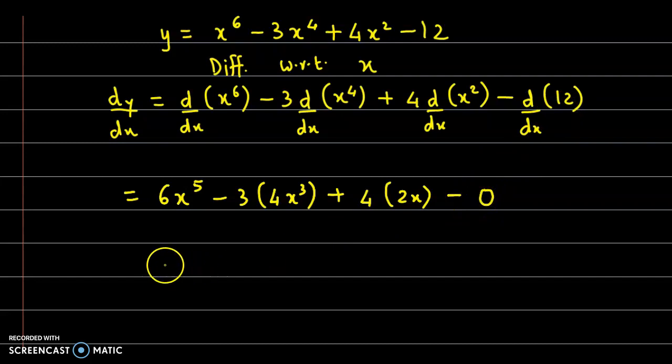So finally we have dy by dx as 6 times x raised to 5, minus 3 times 4 gives us 12 times x cube, 4 times 2 is 8, so here we have plus 8x. So this is the value for dy by dx.